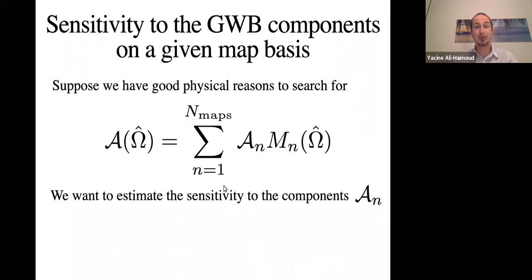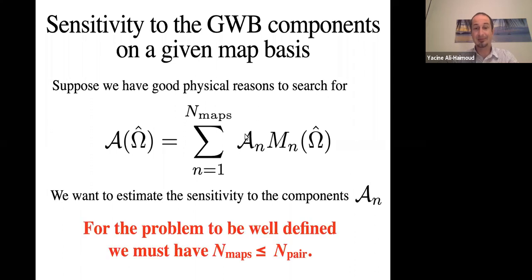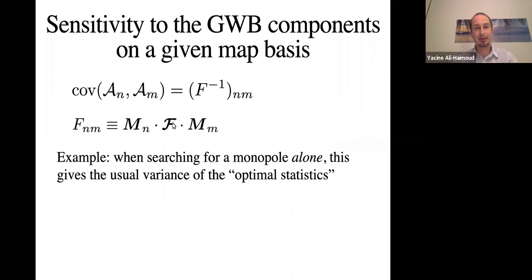So how do we use the Fisher matrix to estimate the sensitivity of the gravitational wave background components if we have some given map basis. So suppose we have some good physical reasons to search for the gravitational background as a sum of some known maps times some amplitude. For example, this could be the spherical harmonics. So the goal of the game here is to estimate how sensitive the PTA is to these components A_n. Again, for the problem to be well defined, you can only afford to have at most n_pair different maps. So given this problem, the covariance of these coefficients, you can show that they are the inverse of the matrix which is obtained by dotting these basis maps on both sides with the Fisher matrix. And to convince yourself, you can take one single basis map which is a monopole and you will find that the covariance of the monopole is the usual variance of the optimal statistic.